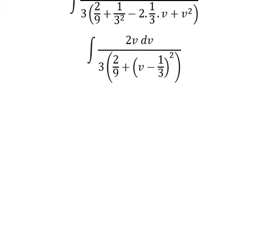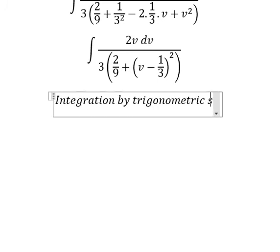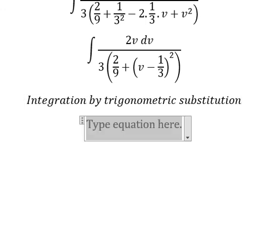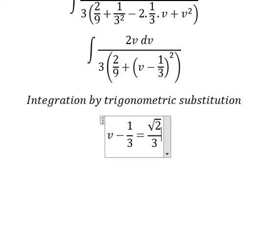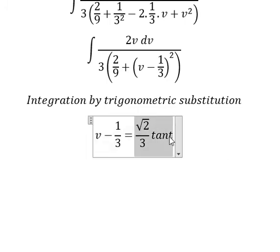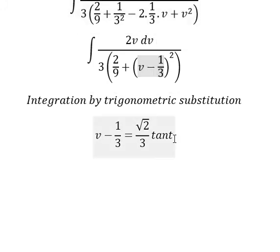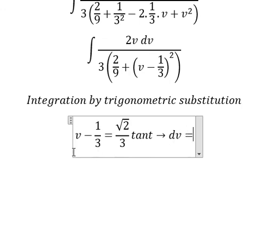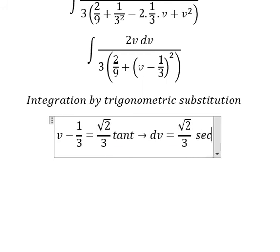We use integration by trigonometric substitution. I let v minus 1 over 3 equal the square root of 2 over 3 times tan(t). With this substitution, the v minus 1/3 squared term becomes 2 over 9 times tan²(t). We factor out 2 over 9, giving 1 plus tan²(t), which we change to sec²(t). Then we simplify using dv: taking the first derivative of both sides gives dv equal to the square root of 2 over 3 times sec²(t) dt.